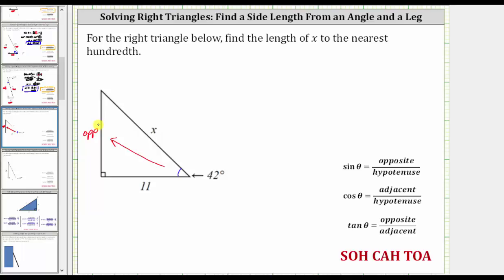The hypotenuse is always opposite the right angle. Because this is the right angle, we know this side here is the hypotenuse that has a length of x units.